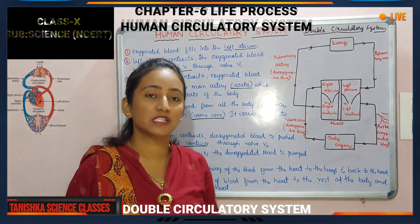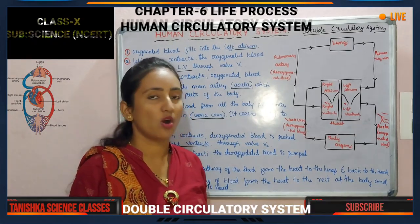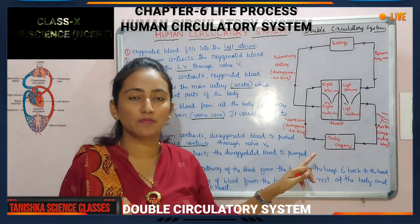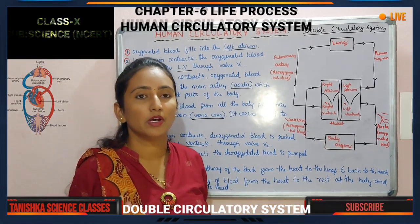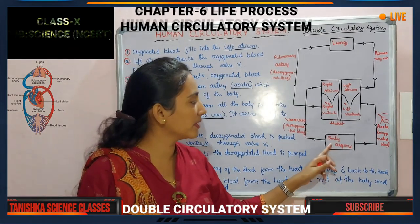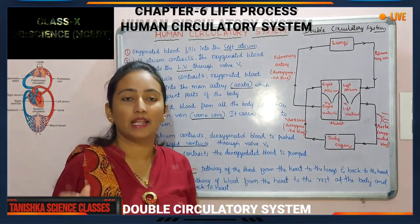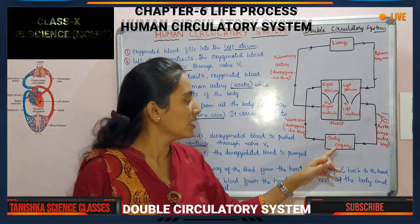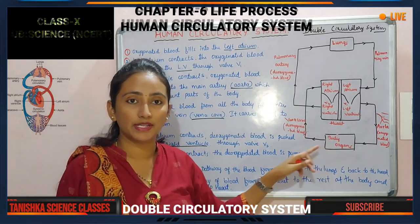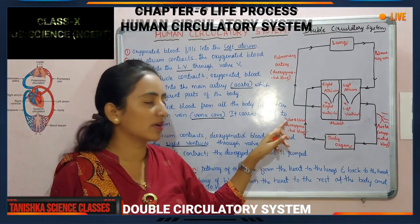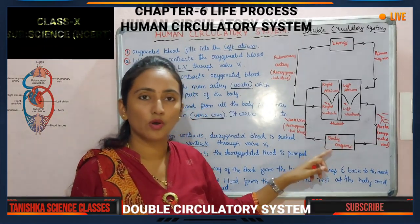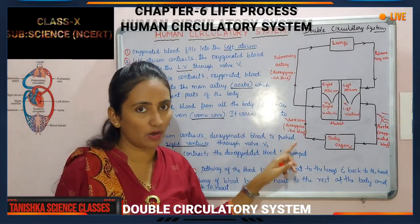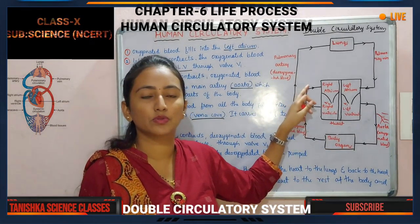Oxygenated blood travels from the lungs to the heart, and then to all body organs, which now receive oxygen. The respiration process takes place, energy is produced, and during energy production, carbon dioxide is produced. That oxygen is used by our body cells, so the blood becomes deoxygenated. That deoxygenated blood, mixed with carbon dioxide and other waste products, travels through the capillaries to the veins and to the main vein called the vena cava.